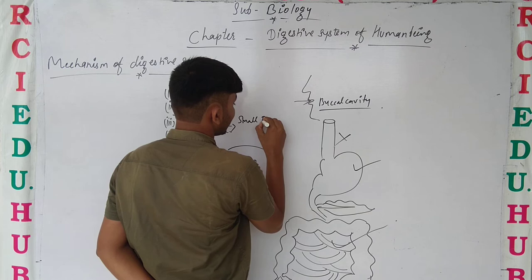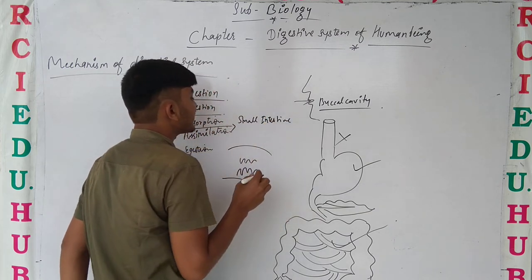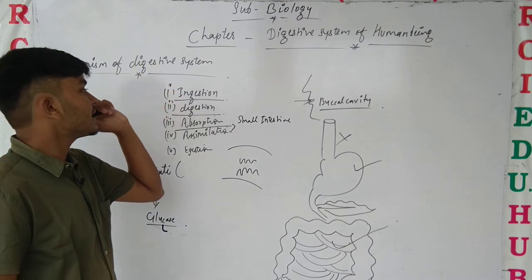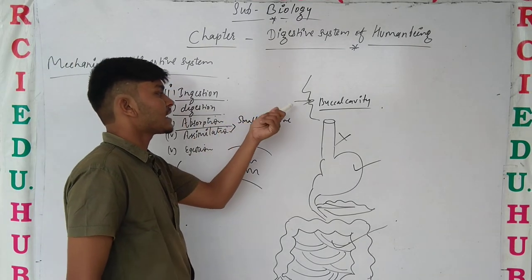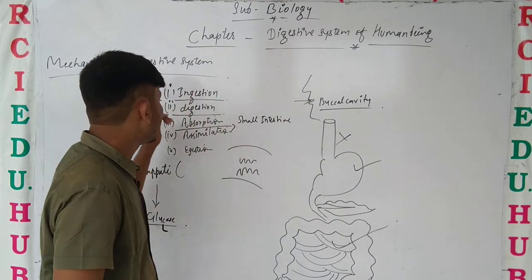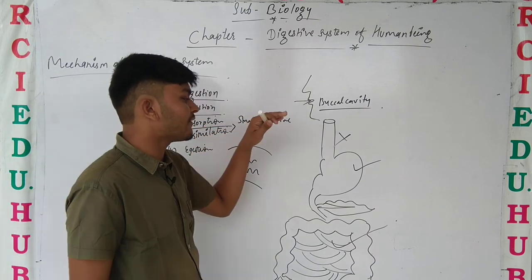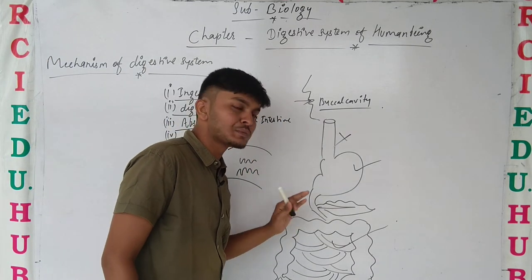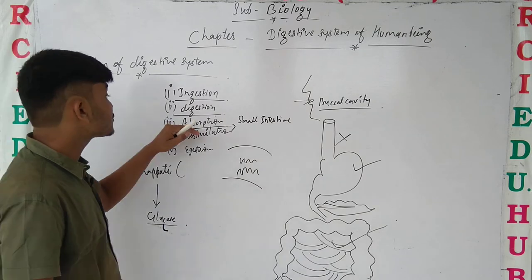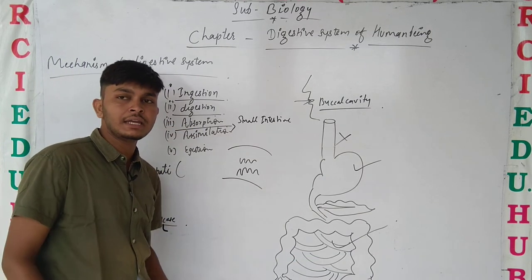Absorption takes place in the small intestine. Ingestion takes place inside the mouth and this process is done by the mouth. Digestion takes place in the buccal cavity, stomach, and small intestine. Absorption takes place in the small intestine because the small intestine has finger-like projections called villi.